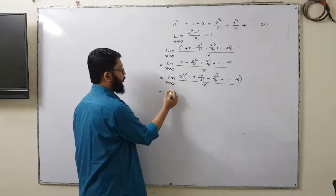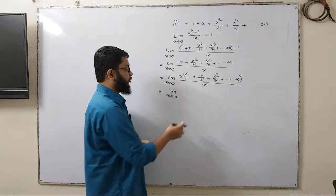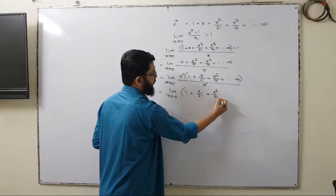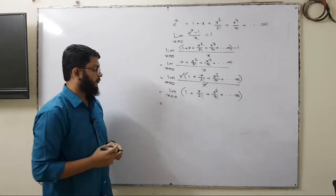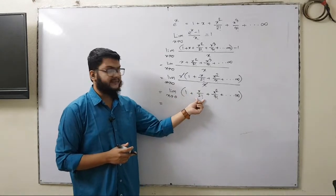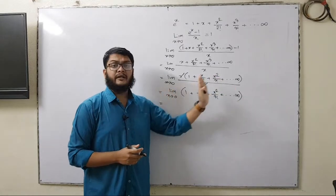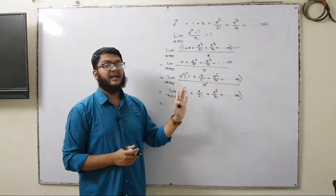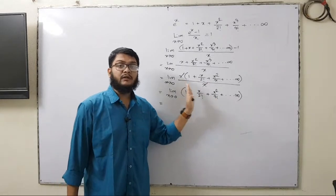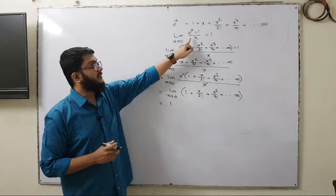Now what do we have? We have limit x tends to 0, with nothing left in the denominator. So we have only the expression: 1 plus x by 2 factorial plus x squared by 3 factorial, all the way to infinity. All the terms except the first contain x — the second term has x, the third term has x, and so on. If we put x equal to 0, each of those terms becomes 0, and we are left with only 1. So the answer is 1.